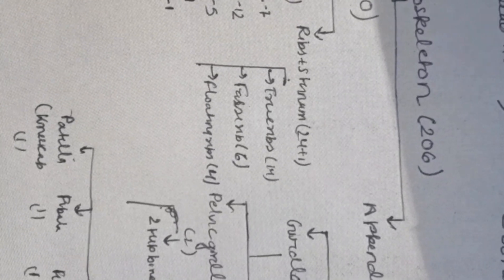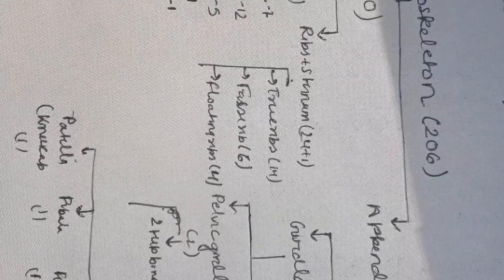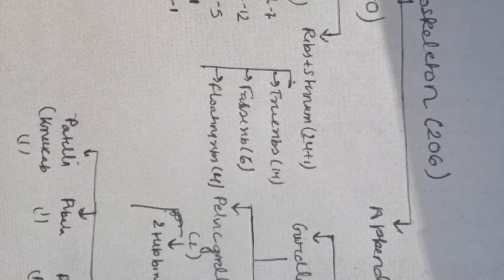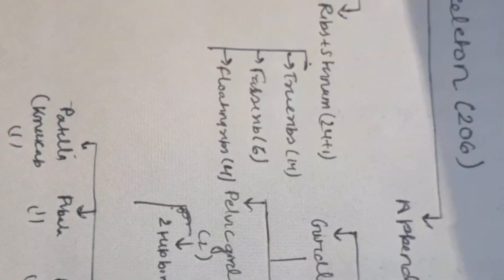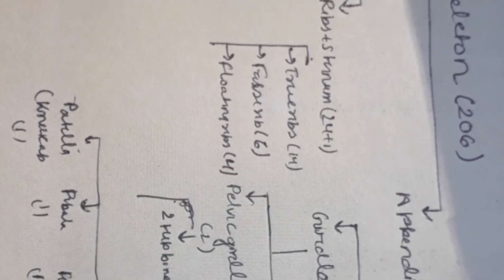Now the girdle bone is divided into two: pelvic girdle and pectoral girdle. Pelvic girdle includes two hip bones, and pectoral girdle includes two shoulder bones, that is scapula, and two clavicles - the collar bone.